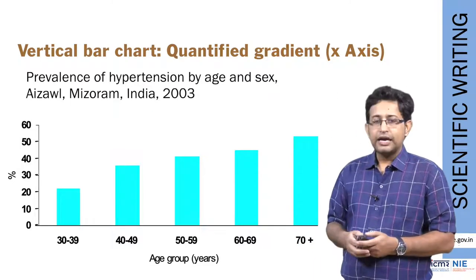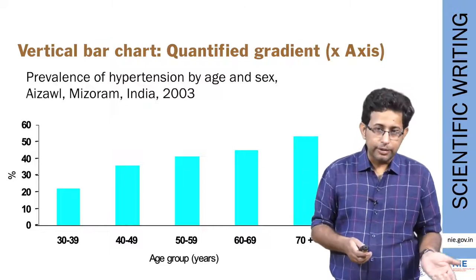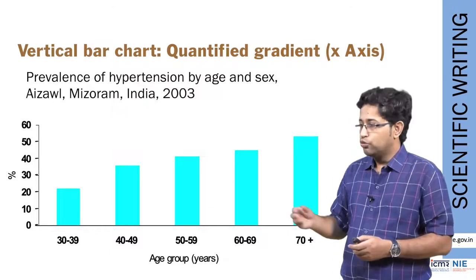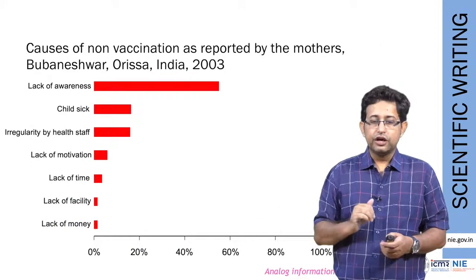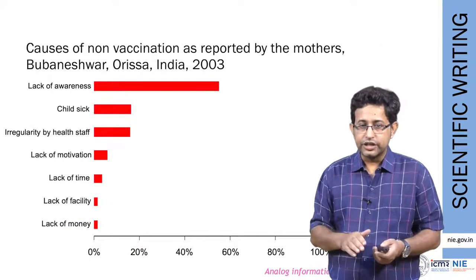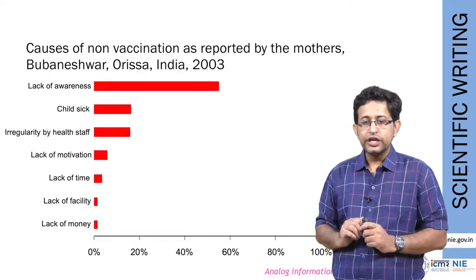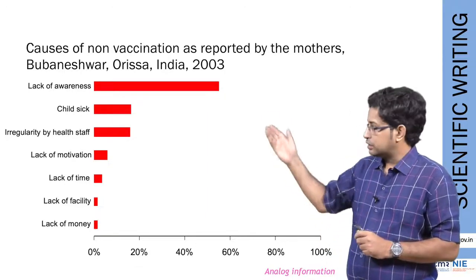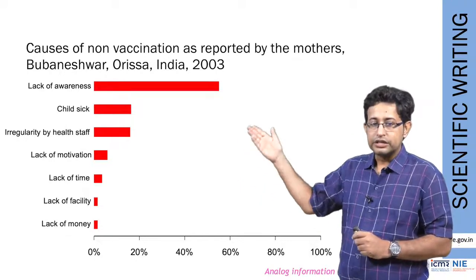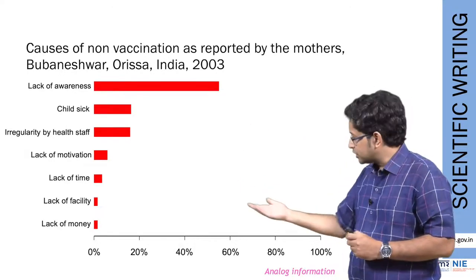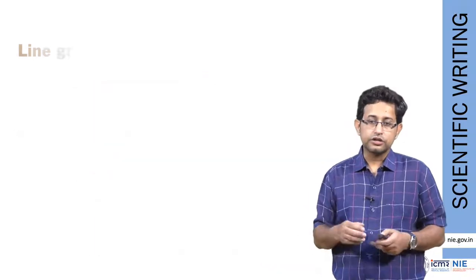The same information can also be shown in a horizontal bar diagram. I must remind you: when using a bar diagram, whether vertical or horizontal, you must mention what the x-axis and y-axis represent. For example, here we have presented the causes of non-vaccination as reported by mothers in Bhubaneswar city in 2003. In the horizontal bar diagram, causes of non-vaccination are on one axis and the proportion is depicted on the x-axis — name it accordingly.